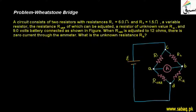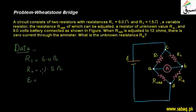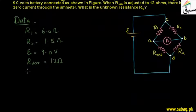Let's write the data — the quantities given in this circuit. First, R1 equals 6.0 ohms. R2 equals 1.5 ohms. The battery EMF is 9 volts. The variable resistance has been adjusted and fixed at 12 ohms. And what we need to find is R-U, the unknown resistance.